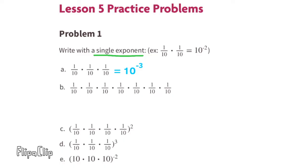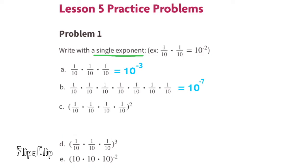Part B: 1/10 is multiplied by itself seven different times, so this is going to be equivalent to 10 to the power of negative 7.